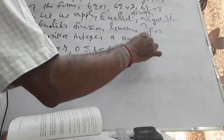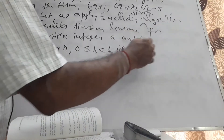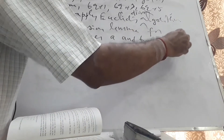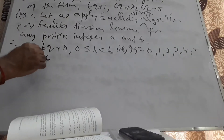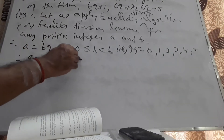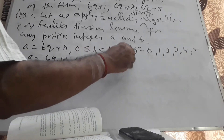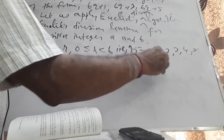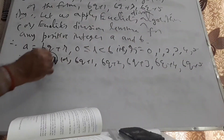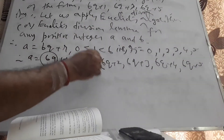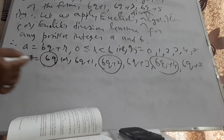R will take any value from 0 to 5: 0, 1, 2, 3, 4, 5. Therefore a equals 6Q, or 6Q+1, or 6Q+2, or 6Q+3, or 6Q+4, or 6Q+5. Here 6Q, 6Q+2, and 6Q+4 are even numbers — I can take 2 as a common factor and write them as 2×3Q, 2×(3Q+1), and 2×(3Q+2).